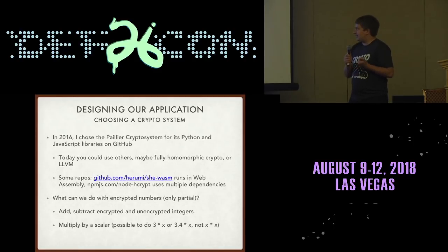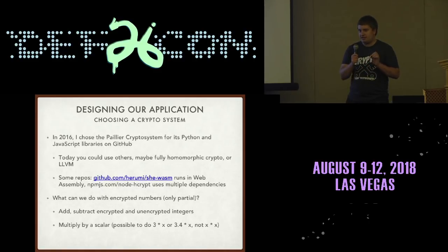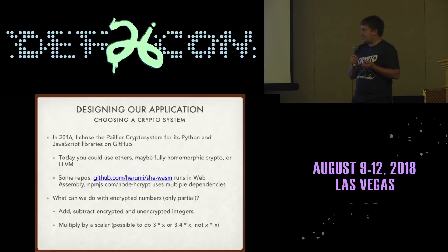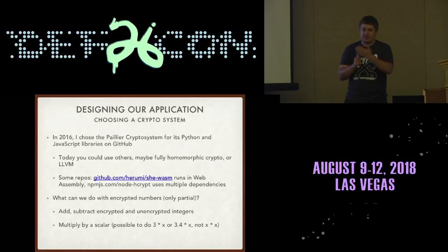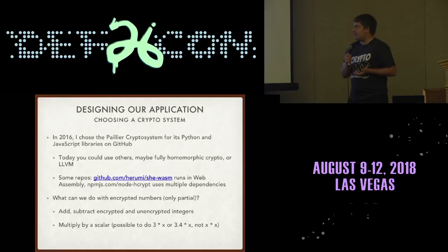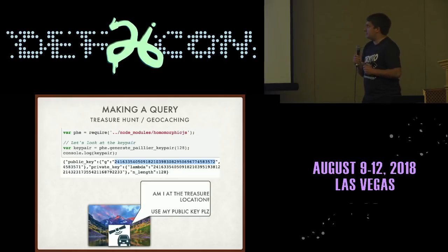To make this work, I chose the Paillier cryptosystem — it's partially homomorphic, so it can do addition and multiplication by non-encrypted numbers, but it can't do something like x-squared — multiplying a number by itself — because of how it's architected. There are some other systems out there. The main reason I chose the libraries I did was wanting a server and a client that could communicate using the same implementation. The Paillier cryptosystem goes back to the 1990s and there are a few different implementations.